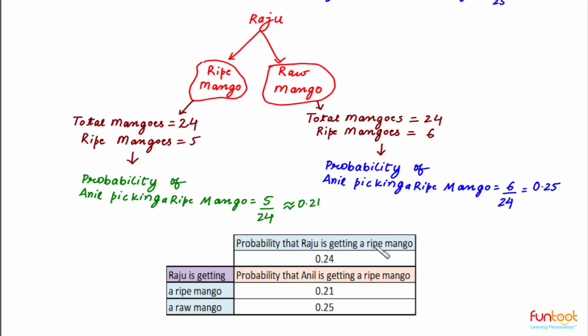So probability of Raju getting a ripe mango is 0.24. If Raju gets a ripe mango, then probability of Anil getting a ripe mango is 0.21. If Raju gets a raw mango, then probability of Anil getting a ripe mango is 0.25.